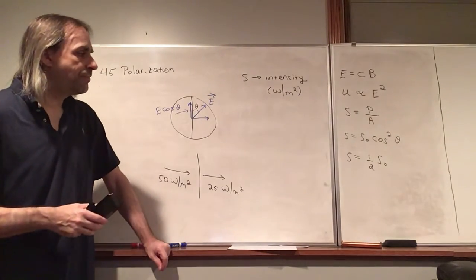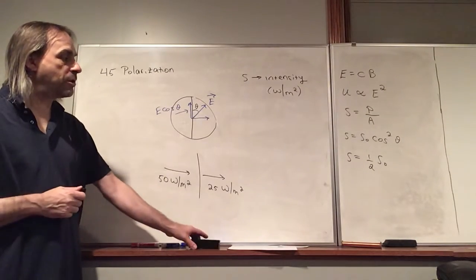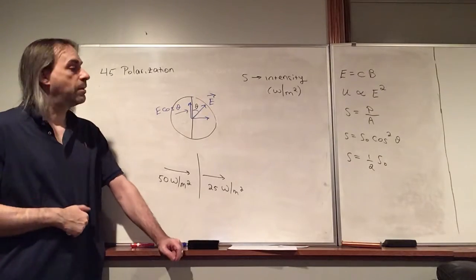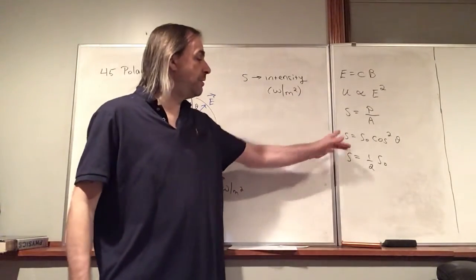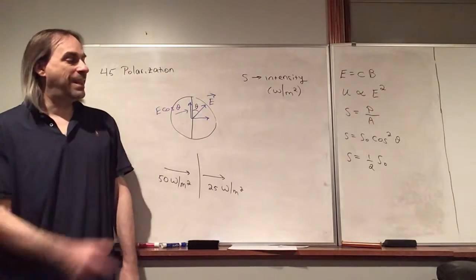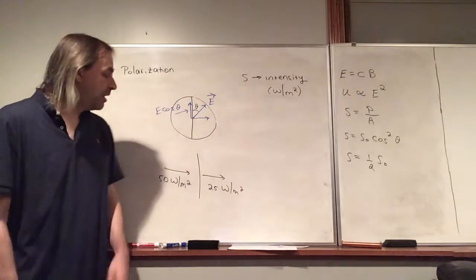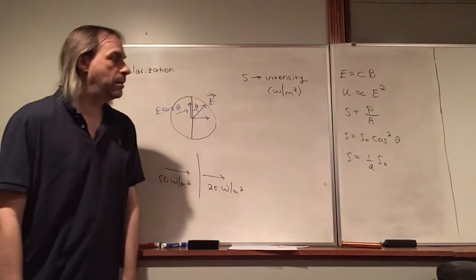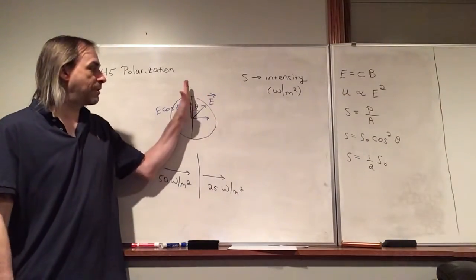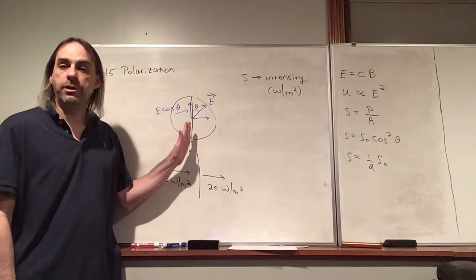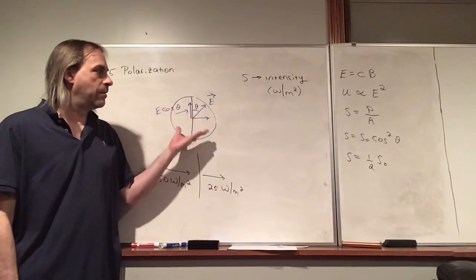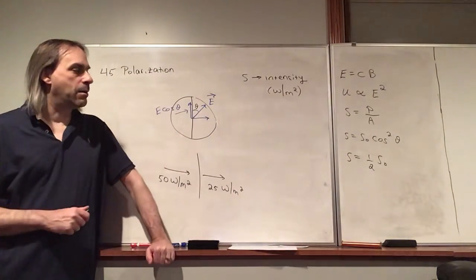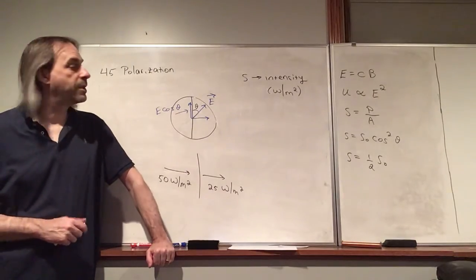To summarize: we have two cases — polarized light uses S = S₀ cos²θ, and unpolarized light gives S = S₀/2. It's obvious which one to use: if the light is unpolarized, you don't know what theta is, so you can't use the cosine squared formula. We'll stop here on polarization and go over some examples in class.